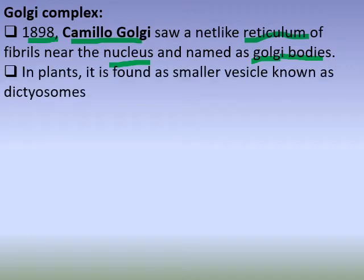Golgi Bodies, Golgi Complex, Golgi Apparatus — these are the names for this organelle. In plants, there are smaller vacuoles. We also have vesicles associated with the Golgi Complex.